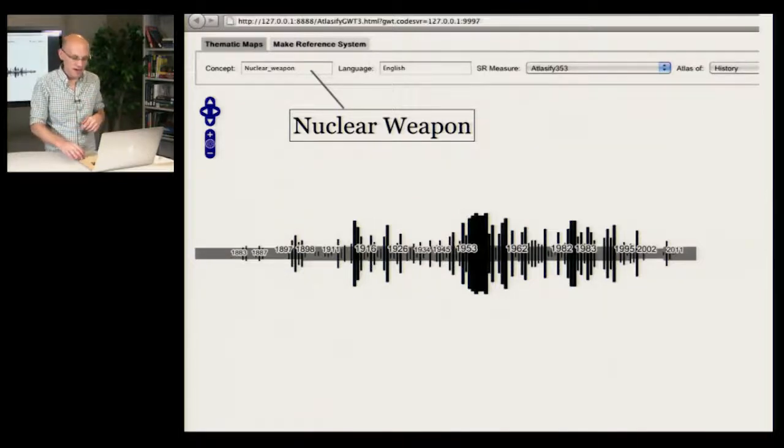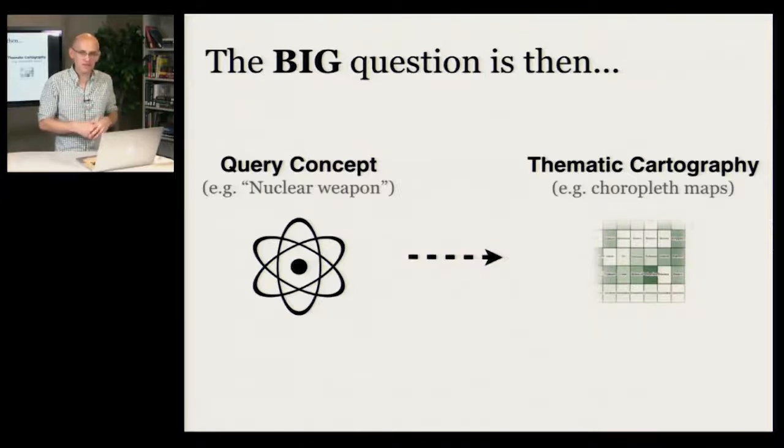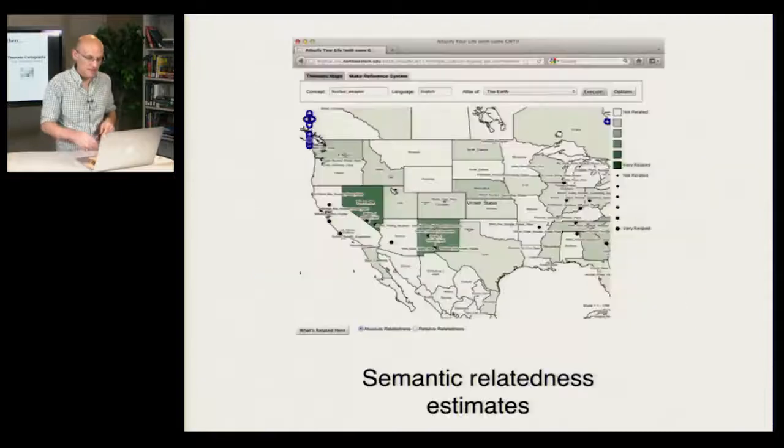I'm going to shift away from the system now and talk about the how. So we've seen that we can convert a query concept like nuclear weapon into something that can be visualized using thematic cartography, and we've seen that we can do this in reference systems from arbitrary domains. How are we able to do this? Well, you've already learned a little bit about how we did this in module six, and that is that we use semantic relatedness estimates, and in this case we built a state-of-the-art semantic relatedness measure, and the output of this measure is our quantitative spatial attribute that we're visualizing using thematic cartography.